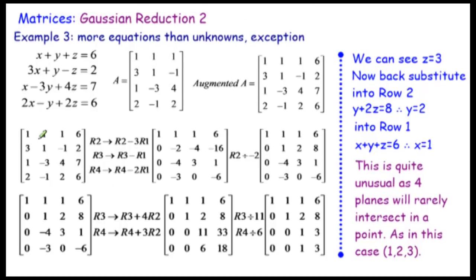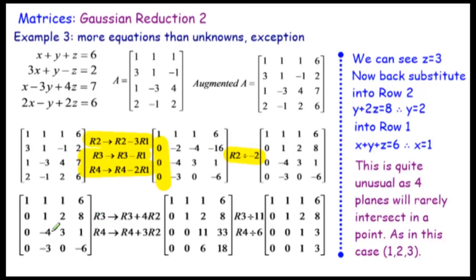We have a 1 here which is very handy, so we keep that. If we take row 2 and subtract 3 lots of row 1 from it, we get a zero, and we do these operations getting zeros all the way down. We then divide row 2 by negative 2 to create a 1 there. Then row 3 plus 4 times row 2 makes a zero — minus 4 plus 4 equals zero — and again we get a zero here.